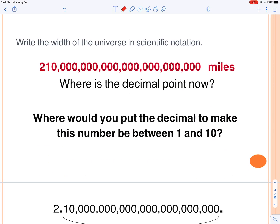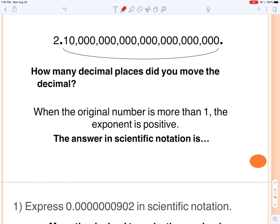So where is the decimal now? Back to this number. I'm going to put it right here. That's where the decimal is, right at the very end. Where would you put the decimal to make this number between 1 and 10? So I think I should put it over here between the 2 and the 1. So let's go ahead and do that. Let's move the decimal place and how about you count for me. How many places do you need to move this decimal to get it all the way over here?